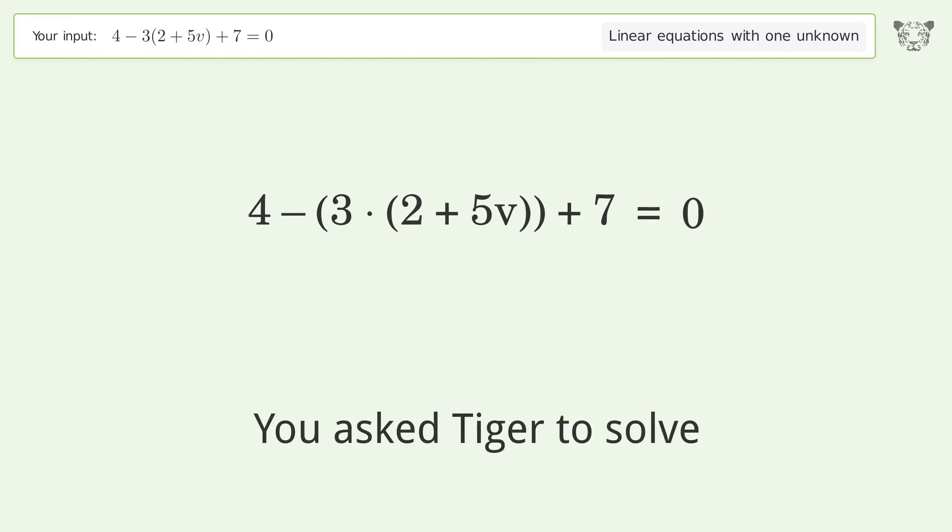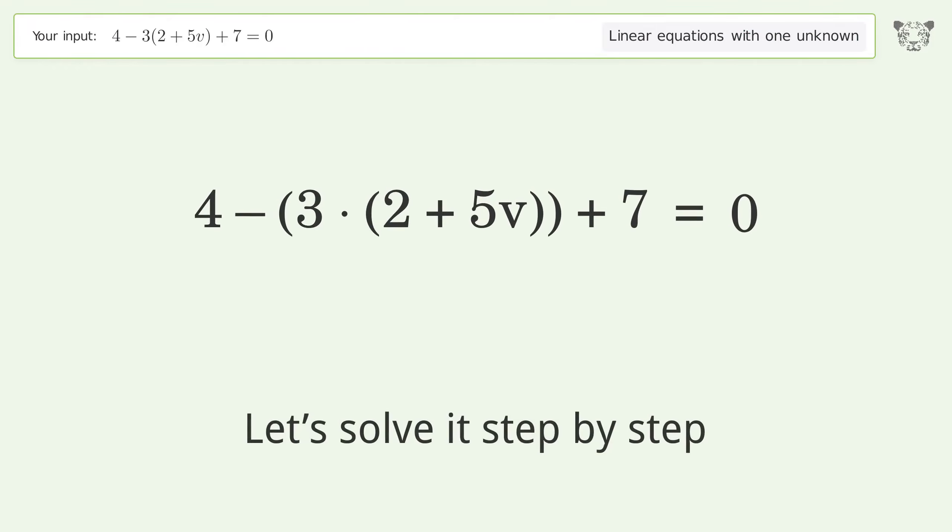You asked Tiger to solve this. It deals with linear equations with one unknown. The final result is v equals 1 over 3. Let's solve it step by step. Simplify the expression.